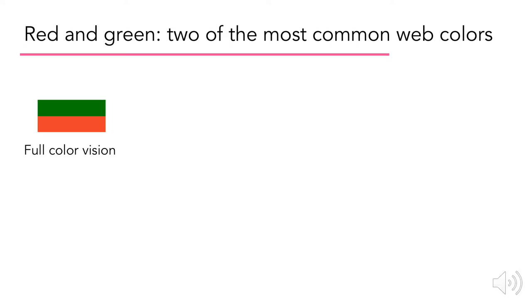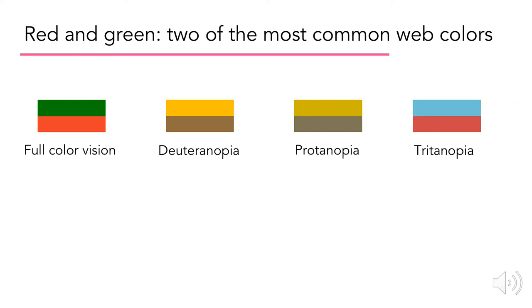Red and green are two of the most commonly used colors for digital products. However, look at what red and green look like to users with different types of color blindness. Not only do they carry significant cultural meaning, especially for Western civilization, but they can also help users quickly identify the intent of a message — because they are far enough apart on the color wheel to have high contrast for people who do not have color blindness or other visual impairments.